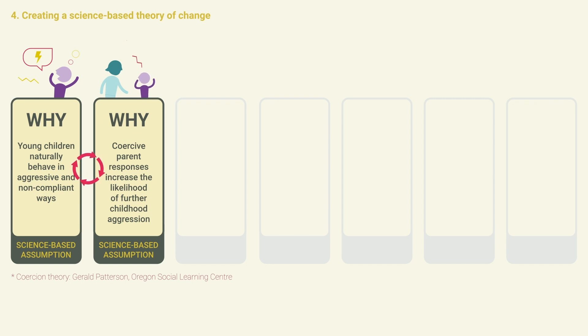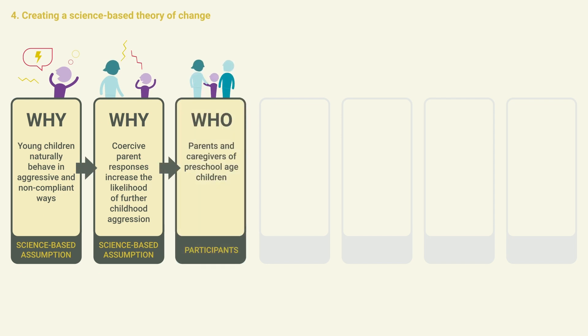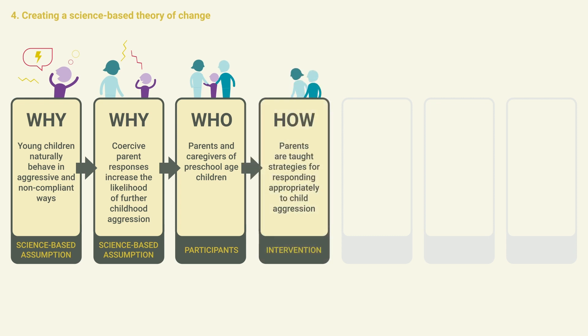This suggests that one way to tackle aggressive child behavior is to break this cycle. This intervention would work with parents and caregivers of preschool aged children. Parents and caregivers would be taught strategies for responding more effectively to their children's aggressive behavior.